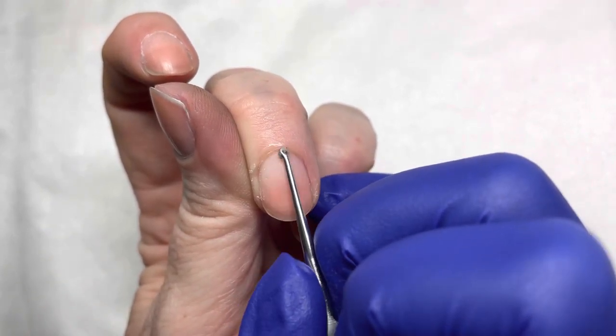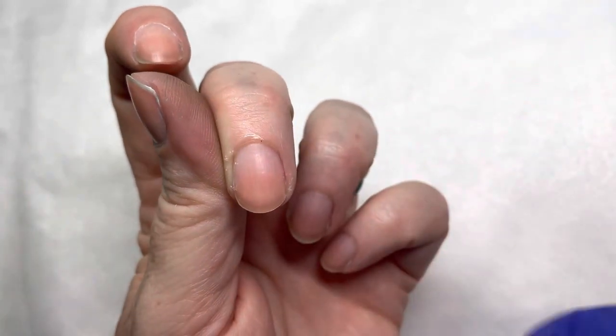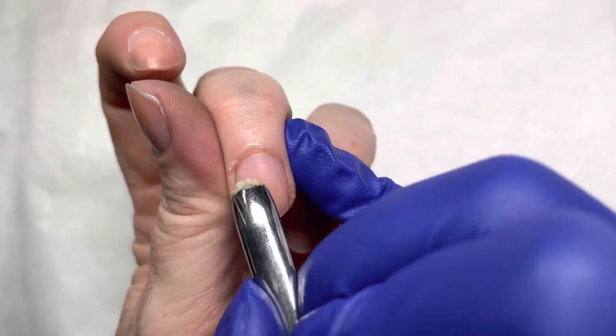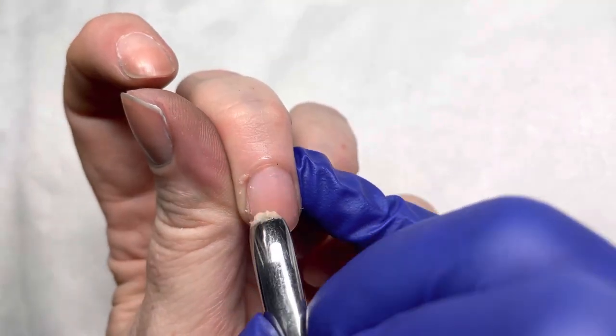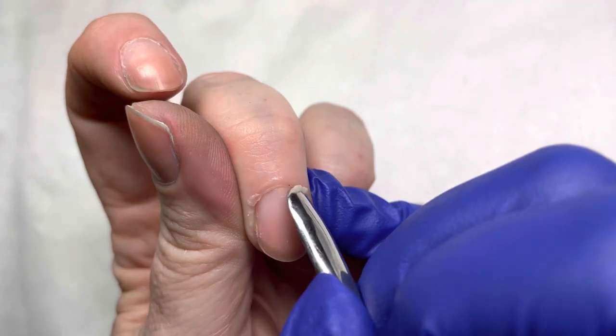Once you've finished your cuticle work on all 10 nails, remember this was slow motion. So normal salon speed would be go up the nail, cross in circles.